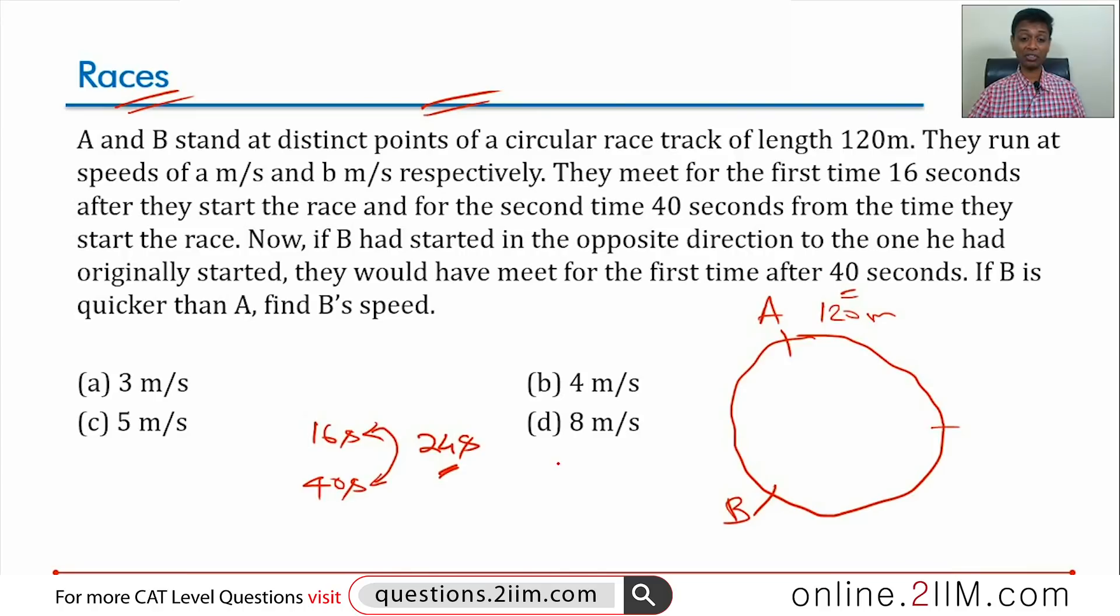If B had reversed direction, then they would have met for the first time after 40 seconds. This is more than even 24 seconds. What does this tell us? After reversing direction, the relative speed is much smaller. In the original scenario, they were both running towards each other. In the second scenario, B reverses and goes like this.